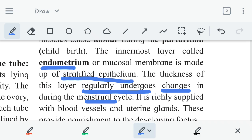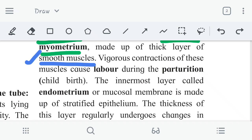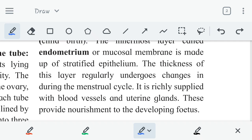Because we know endometrium is the place for the implantation of the embryo. When the embryo is implanted in the endometrium, then the embryo is able to get all the nutrition from this layer. And that is the reason it is richly supplied with blood vessels and uterine glands. This is why uterine glands and various blood vessels are present, so that the newborn baby or fetus gets nutrition in the appropriate way. This is the relevance of the endometrium. Endometrium or mucosal membrane is made up of stratified epithelium. The thickness of this layer regularly undergoes changes. Why is it undergoing regular changes?